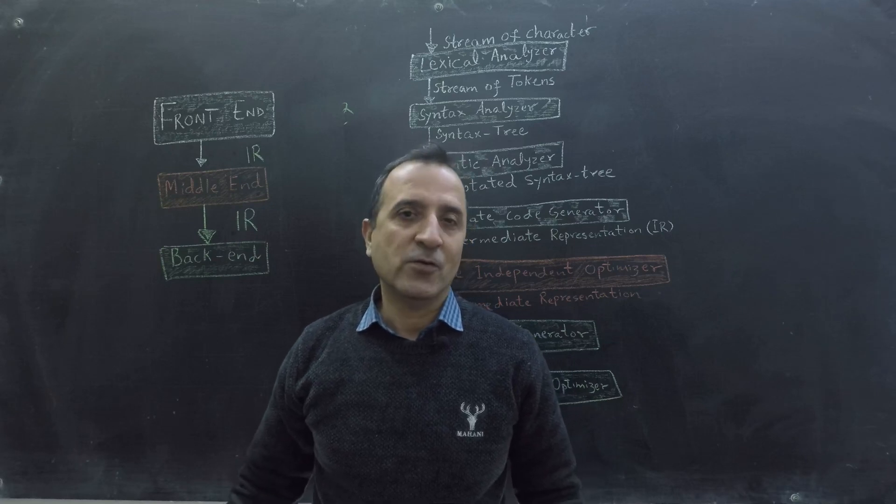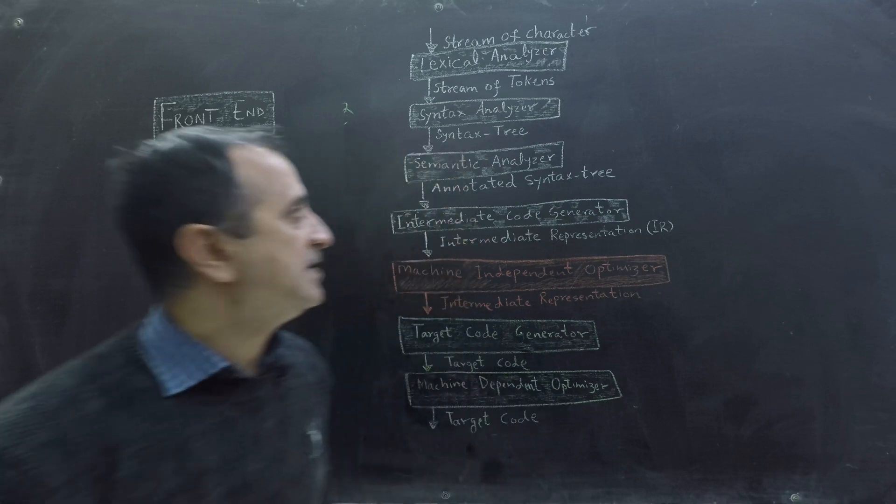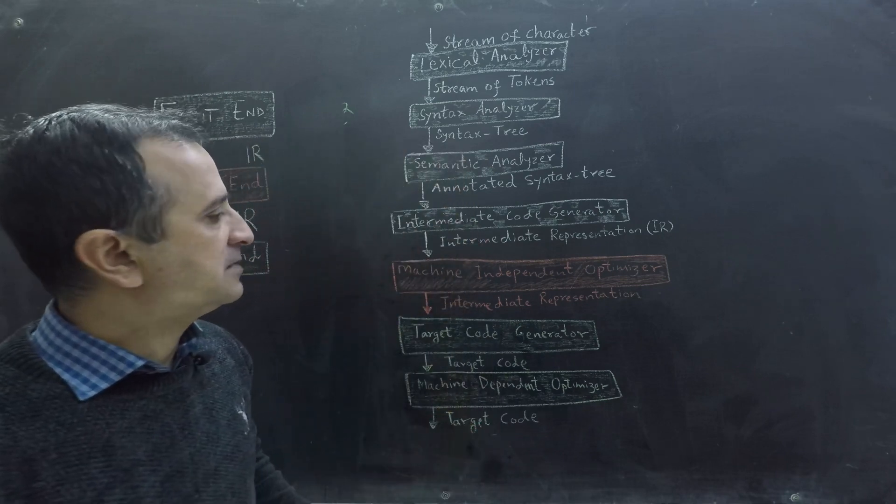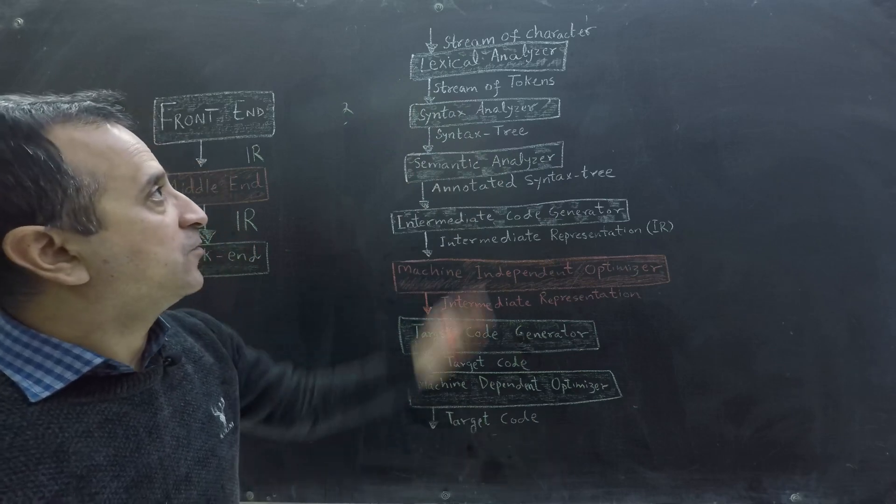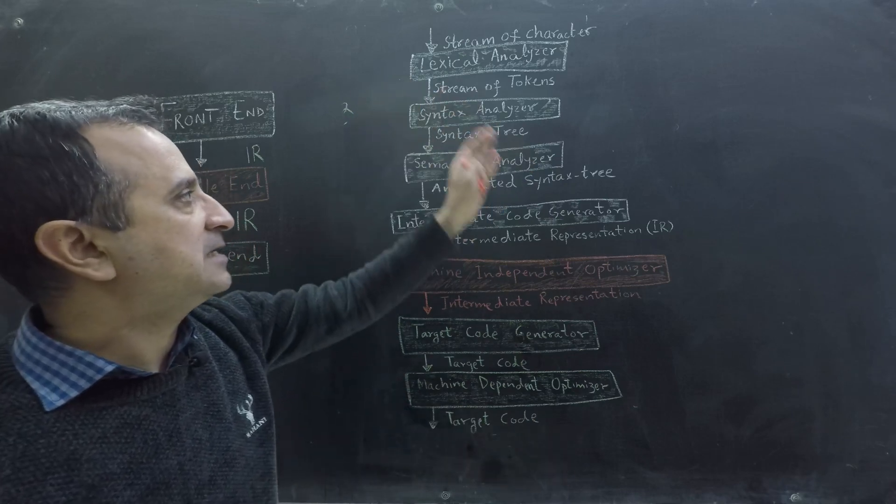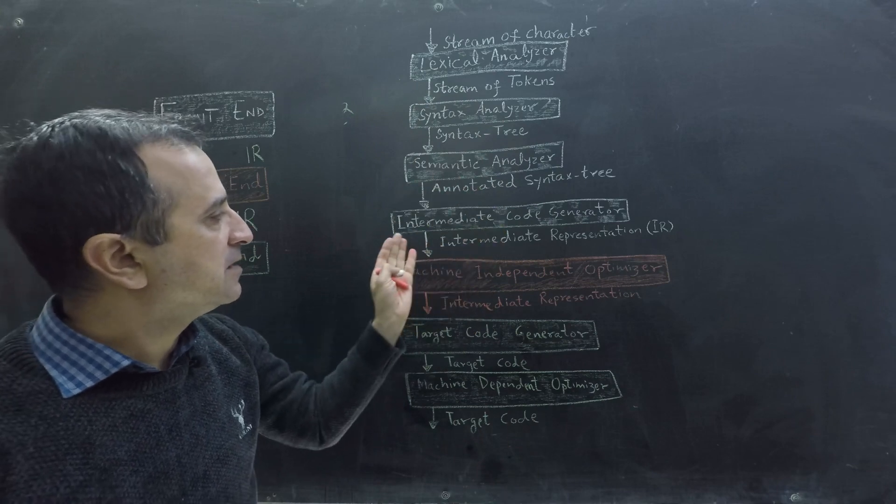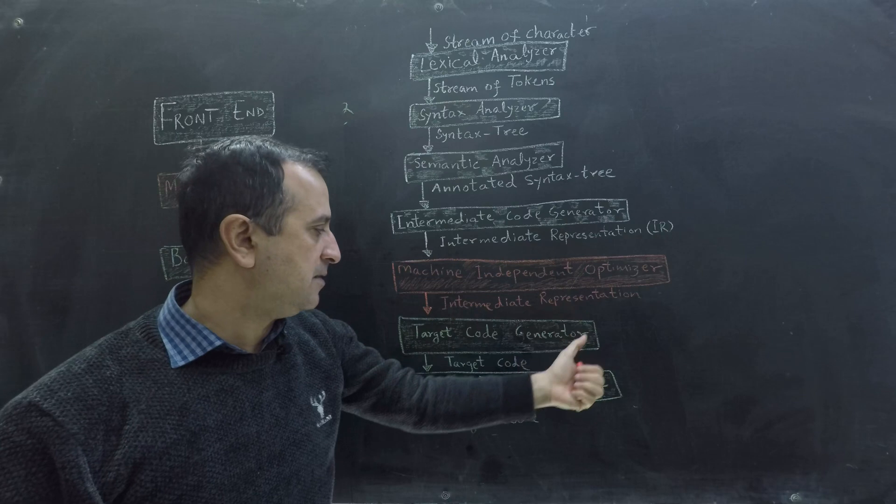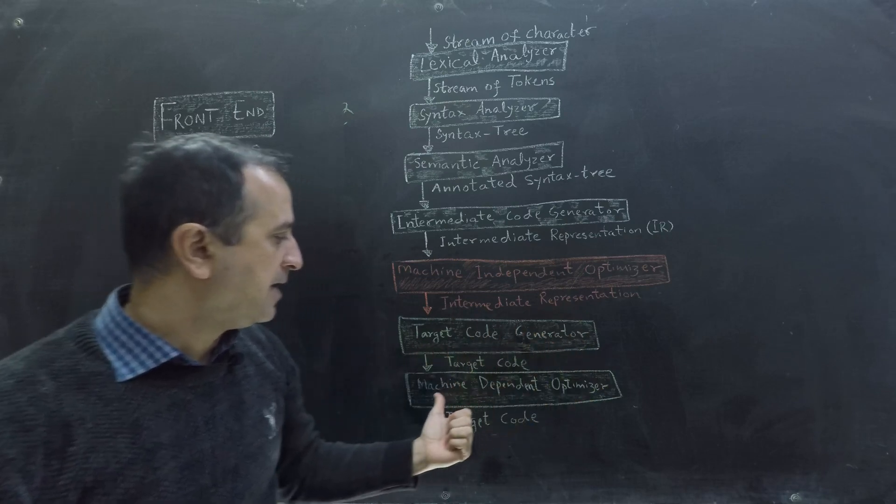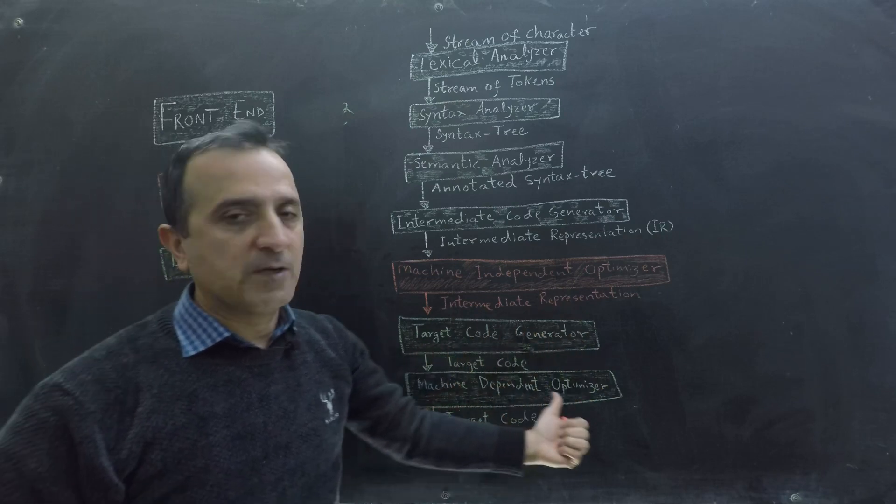In a previous video we have learned about phases of compiler. A compiler has seven different phases from lexical analyzer, syntax analyzer, semantic analyzer, integrated code generator, machine independent optimizer, target code generator and finally machine dependent optimizer.